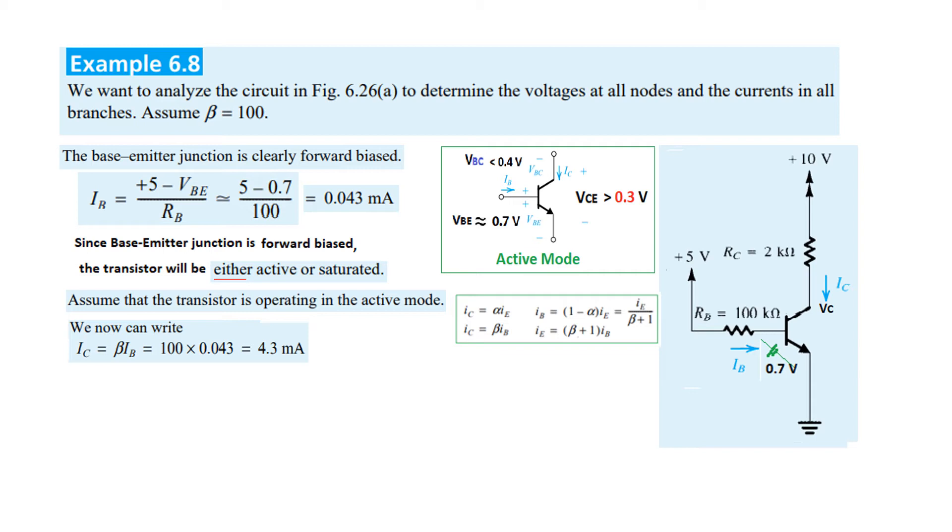Now we'll find VC. Looking at this diagram, we know this voltage here. We know current IC and we know RC, therefore this voltage drop divided by the voltage drop here will give us VC. So VC = 10 - IC·RC. Plugging in the value, VC = 1.4 volts.